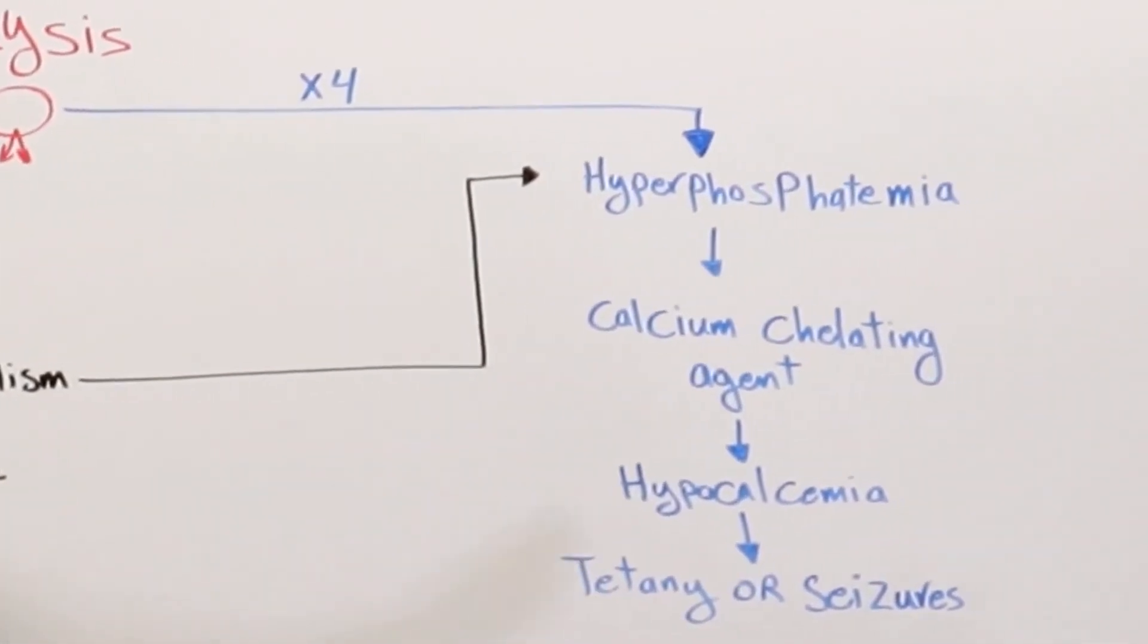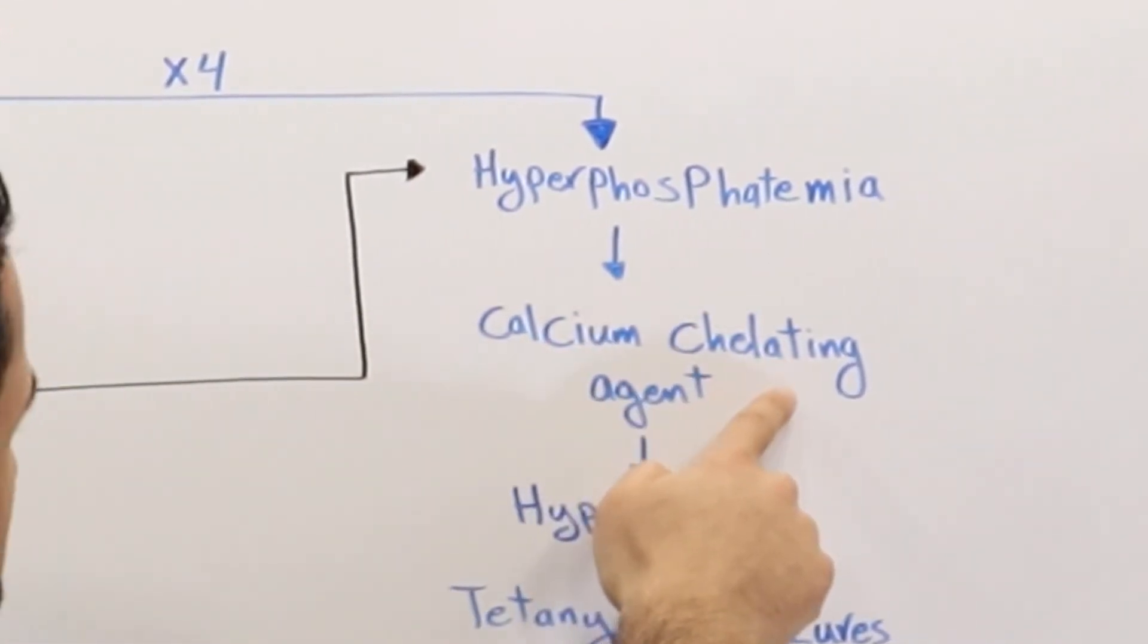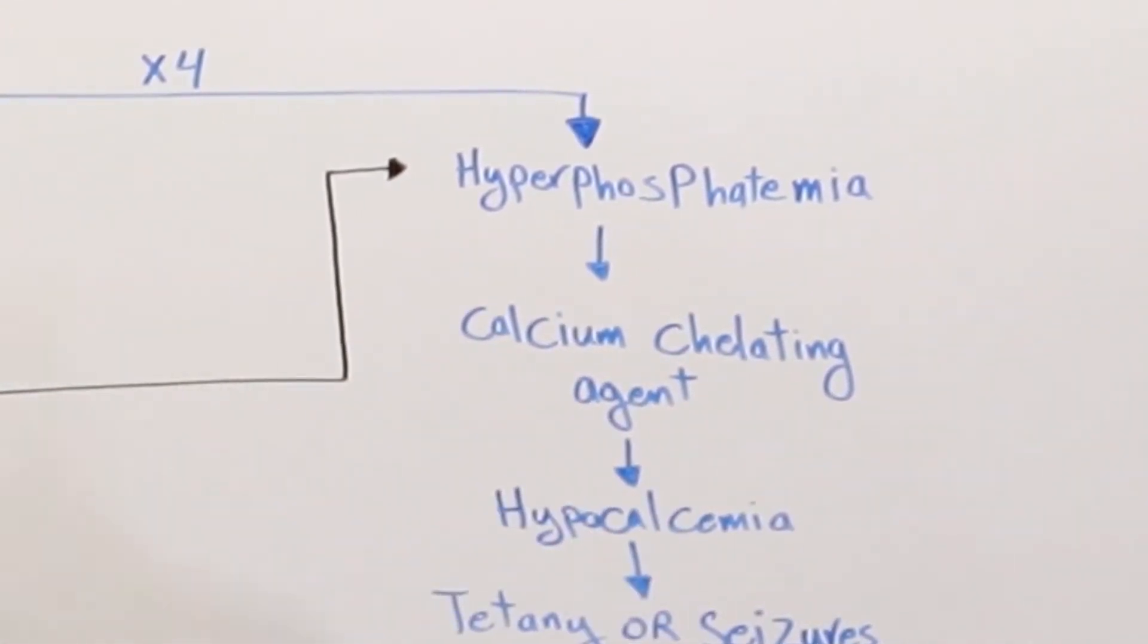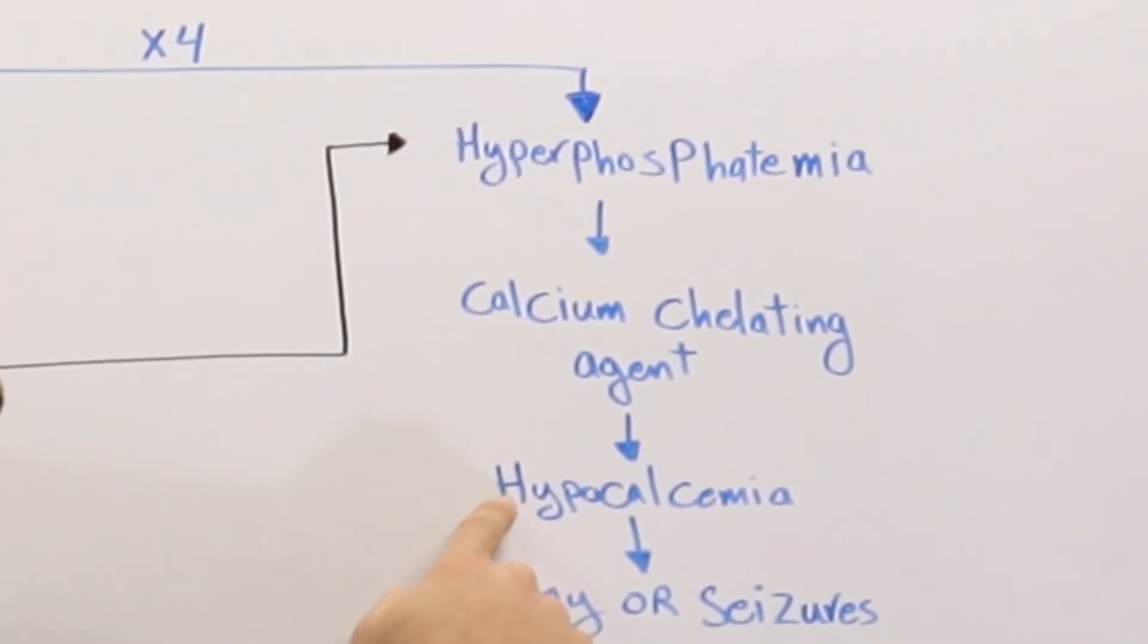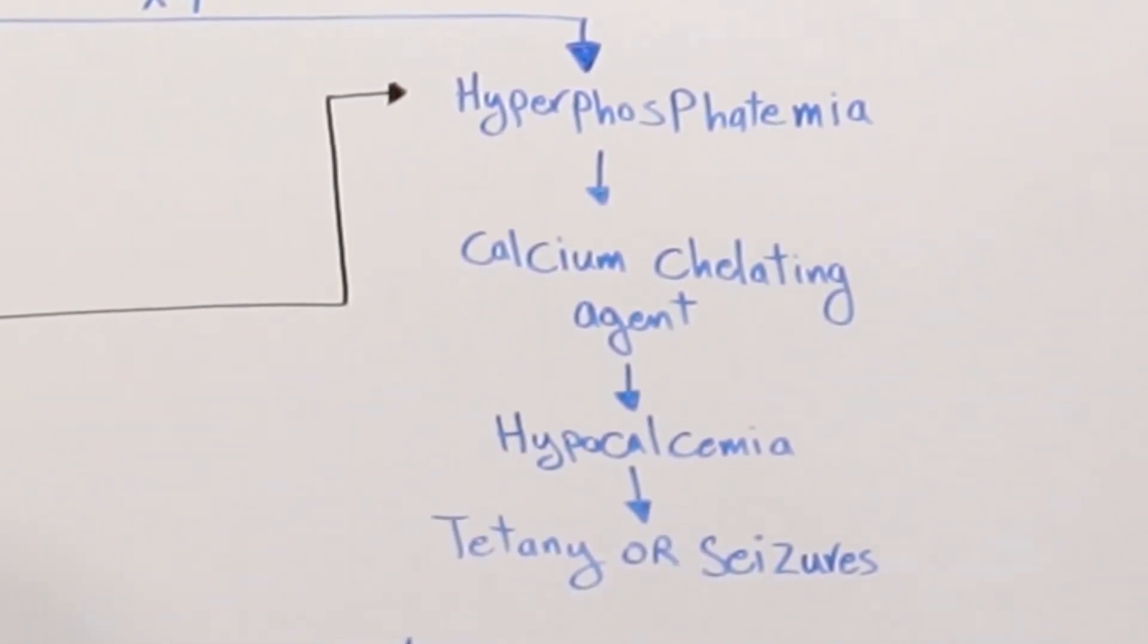Phosphate is a calcium chelating agent. Basically what happens in this step is that phosphate binds to calcium, leading to low amounts of calcium in the body, so hypocalcemia. When we have hypocalcemia, this leads to tetany or seizures.